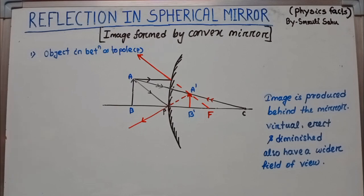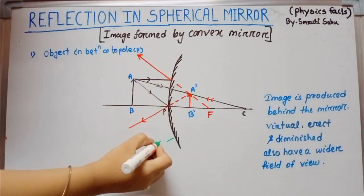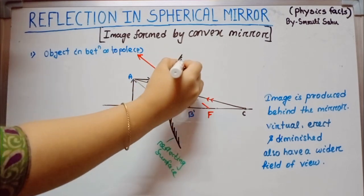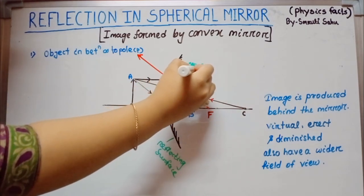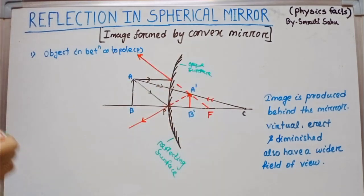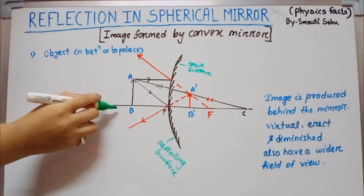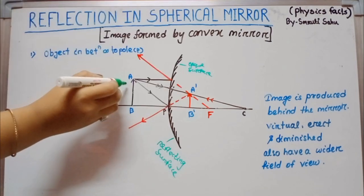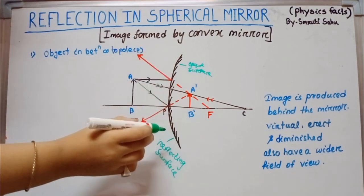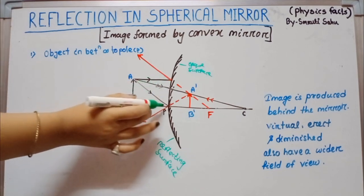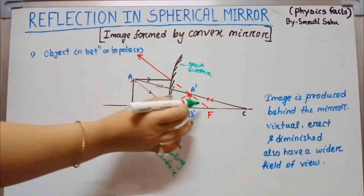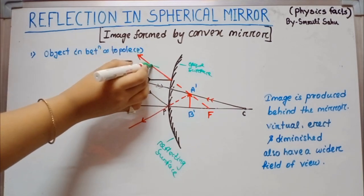Now, image formed by a convex mirror. The outer wall surface is the reflecting surface, whereas the inner hollow surface is the opaque or silver-polished surface. Take any object placed anywhere between infinity and the pole. An incident ray falls on the convex mirror surface and reflection takes place. Take one incident ray parallel to the principal axis — after reflection it diverges, but appears to come from the focus.